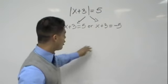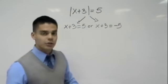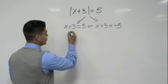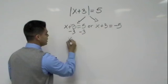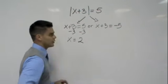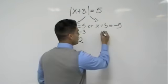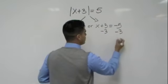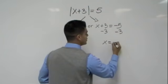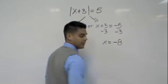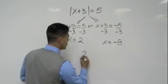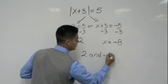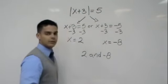Now what we do is we solve both of our equations. So the first we do minus 3 to both sides and we get x is equal to 2. And our second, we do the same thing, minus 3. We see that our answer now is x is equal to negative 8. So therefore our solutions are 2 and negative 8.